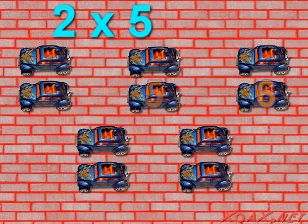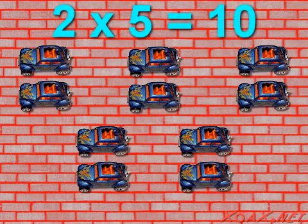We have 1, 2, 3, 4, 5, 6, 7, 8, 9, 10 cars total. So the product of 2 times 5 is 10.